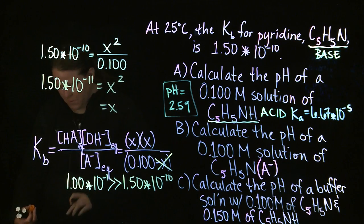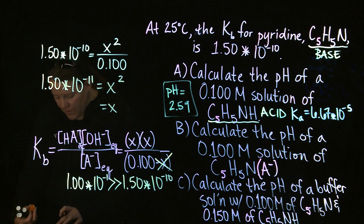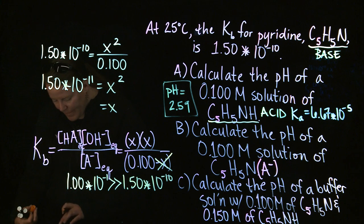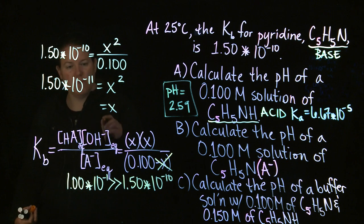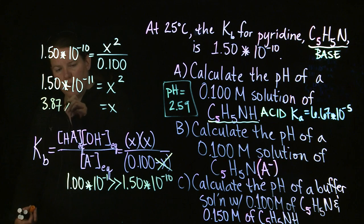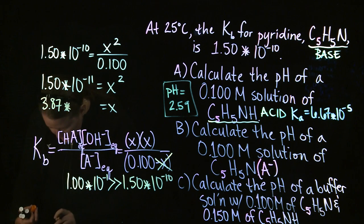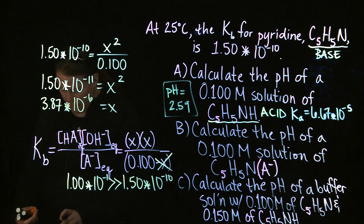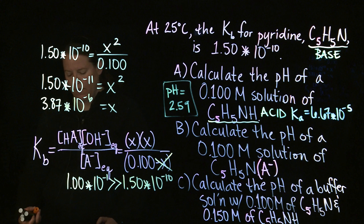So x must equal the square root of 1.50 times 10 to the negative 11th. And I got a cool number like, let me do this one more time with some parentheses around it. I got a cool number like 3.87 times 10 to the negative 6th. Is that right? Let me make sure that I have this in scientific notation. Yeah! 3.8729 blah blah blah blah.